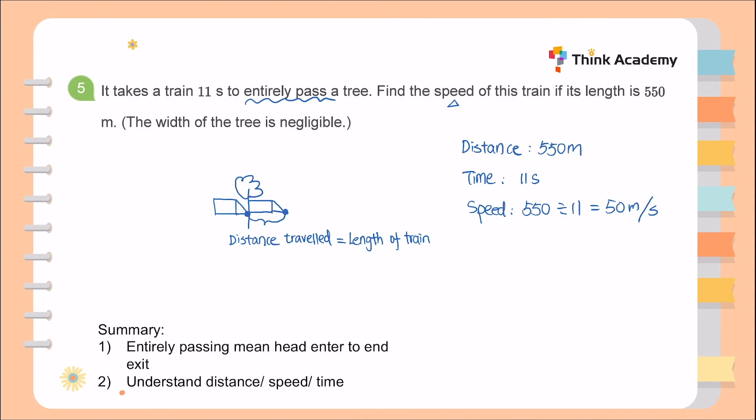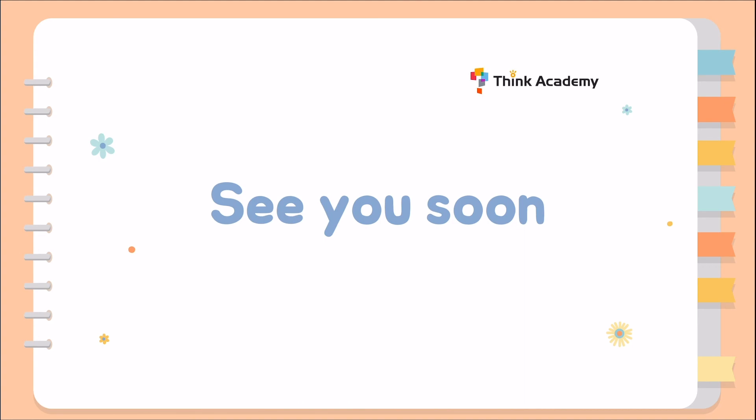For this question, 'entirely passing' means head-enters to head-exits, so we always calculate from the head of the train to the head of the train, and we apply the relationship: speed equals distance divided by time. Thank you for completing the July Grade 4 extra challenge. Hope to see you soon at Think Academy.